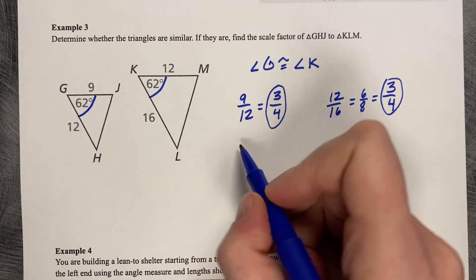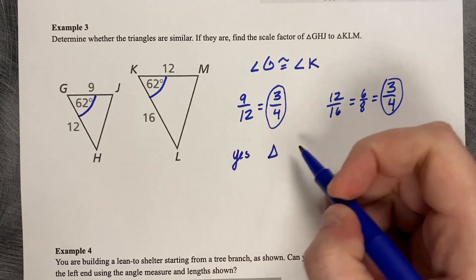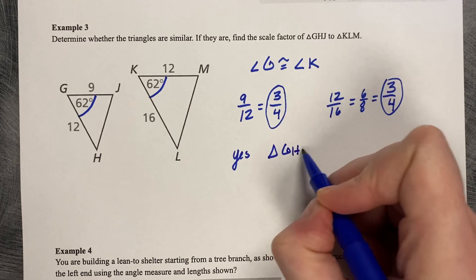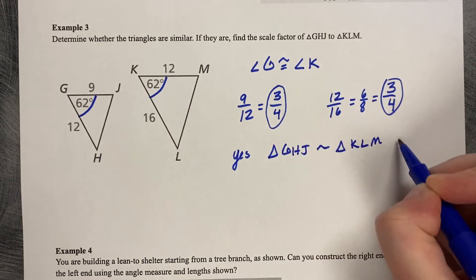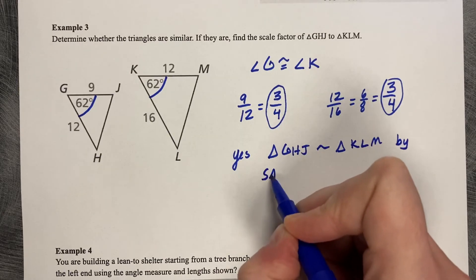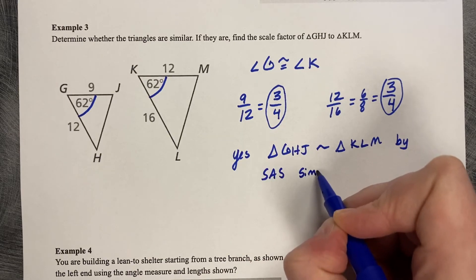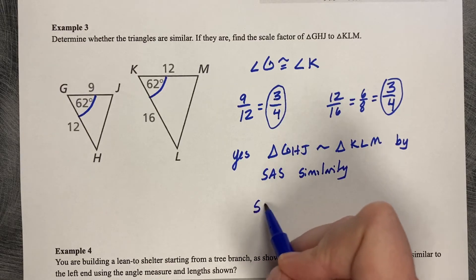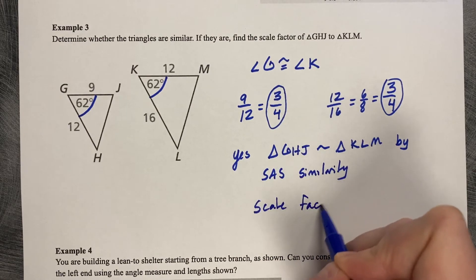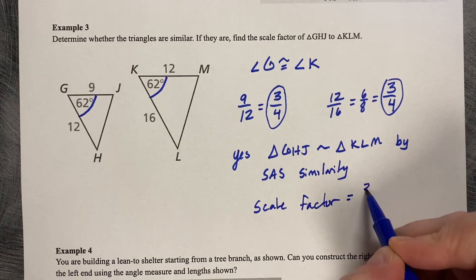So yes, they are similar. Triangle GHJ is similar to triangle KLM by SAS similarity. And the scale factor is 3 fourths.